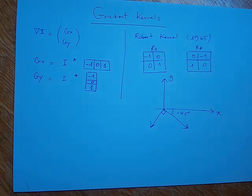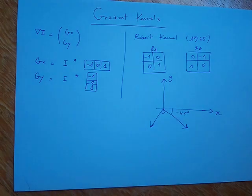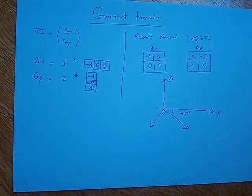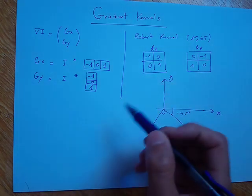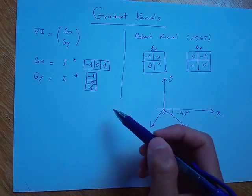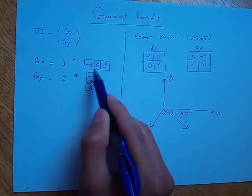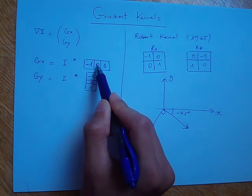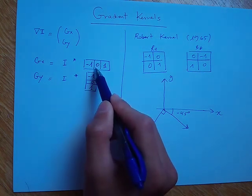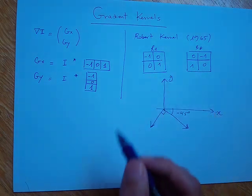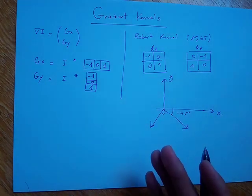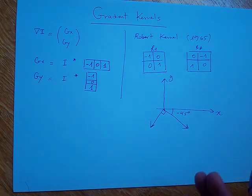In practice, we usually do not use either of those techniques. The main reason is that they are too sensitive to noise. Another particular problem with the Roberts kernel is that it does not have a clear center, unlike the 1D kernel which has the zero as its center. The other kernels have a clear center and a better ability to deal with noise.